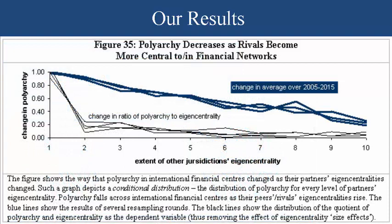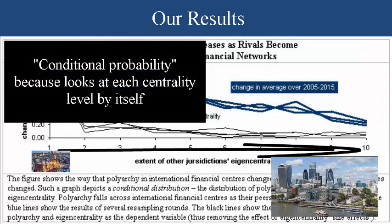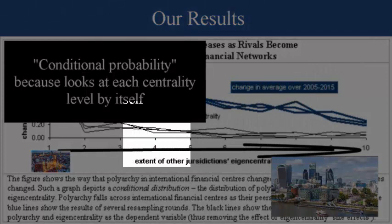And all that means is: let's break up all jurisdictions' centrality according to the most central ones and the least central ones. Of all those centralities, what do we know about polyarchy at that time? And according to this analysis,